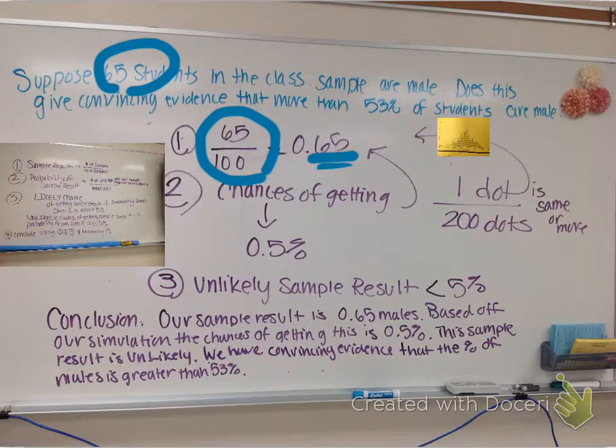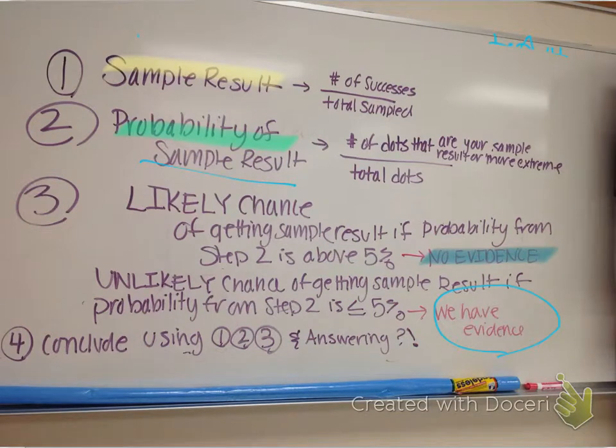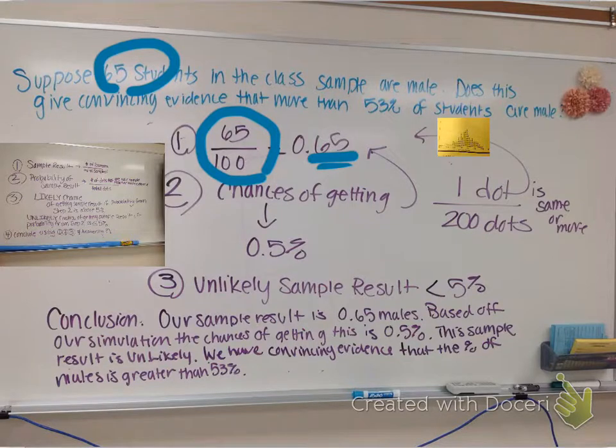We then draw a conclusion. Our sample result is .65 males. Step one. Based off our simulation, I'm going to be really picky on that, the chances of getting this is 0.5%. Step two. This sample result is unlikely. Why? Because it's less than 5% or less than or equal to 5%. So we go to our pink that we had here. Since it's less than 5%, we have evidence.